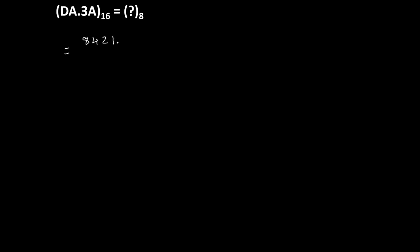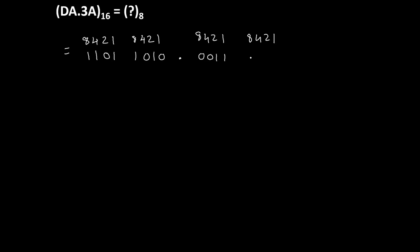Let's convert DA.3A from base 16. D is 13 in decimal, so we write its code using 8421: 8+4=12, 12+1=13. Then A is 10 in decimal, so using 8421: 8+2=10. We keep the fractional point as it is. Then for 3, using 8421: 2+1=3, so no need to write anything for 8 and 4. Then for the last A, which is 10 in decimal, using 8421: 8+2=10. We have successfully converted this fractional hexadecimal number into binary.